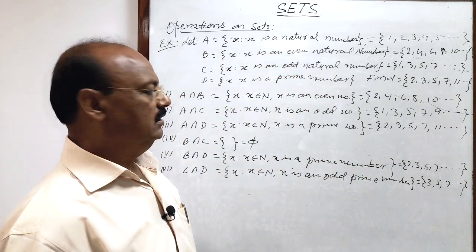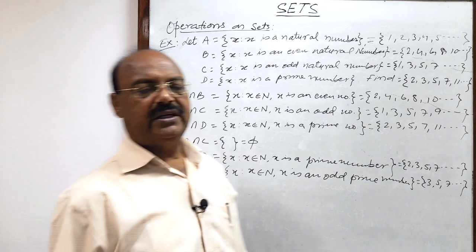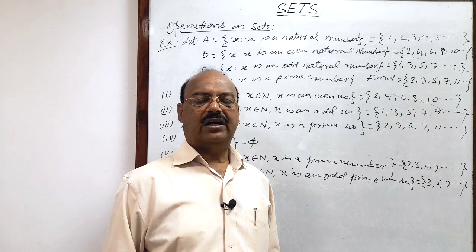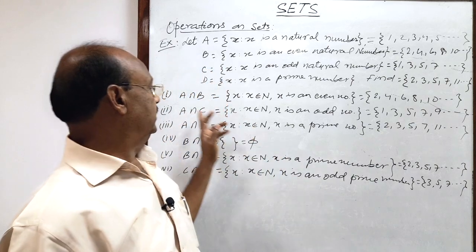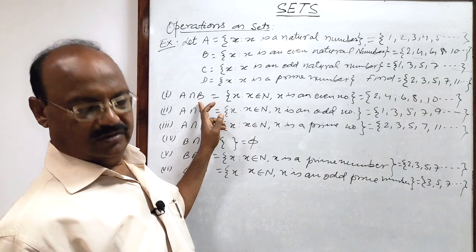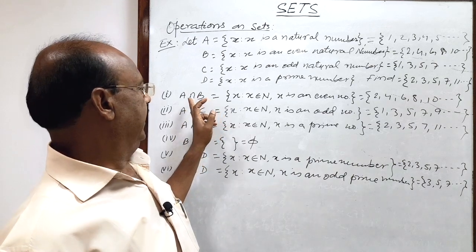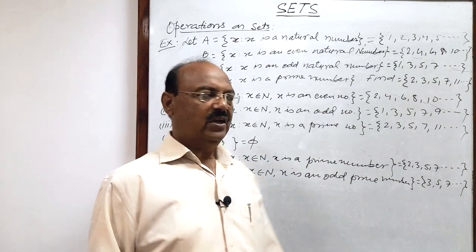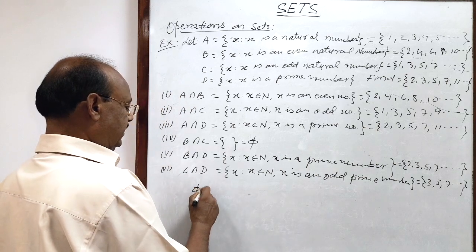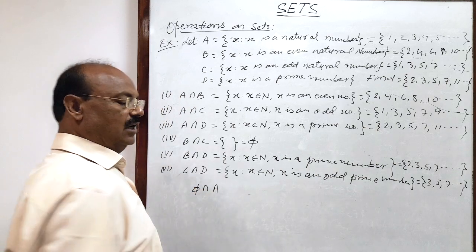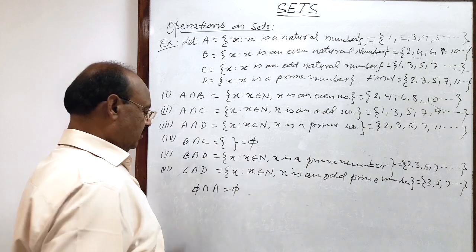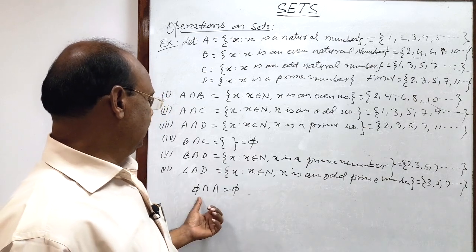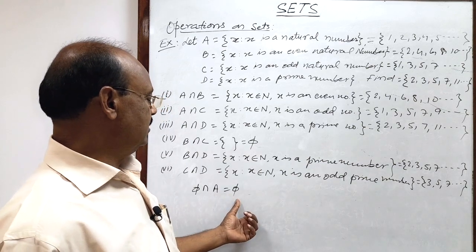In this way, the intersection of two sets is a set which consists of only those elements which are common in both the sets. A very interesting related concept: if you have to find φ∩A for any set A, the answer is definitely φ, because φ has no element. So common elements between φ and any set A is no element — simply φ.